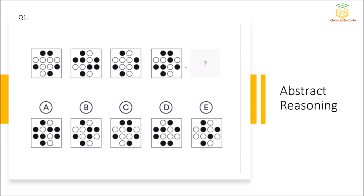Question number 1: we have to find out the missing diagram. We need to observe carefully which option is going to come here — A, B, C, D, or E. So in the first diagram we have 5 black dots and 7 white dots. In diagram 2 we have 7 black dots and 5 white dots. Then we have 7 white dots and 5 black dots. Then again 7 black dots and 5 white dots.